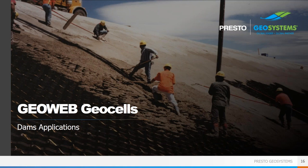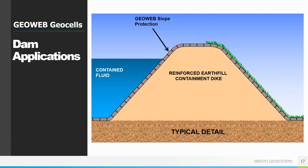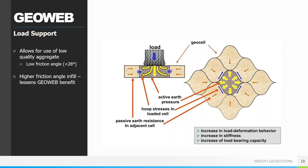Now we'll look at some application-specific uses of the GeoWeb system, starting with the armoring of dams, dikes, and levees. A typical earthen dam or dike application might look something like shown here. On the wet side, we'd have GeoWeb armoring, generally with an aggregate or concrete infill, with the infill type mostly dependent on wave action and drawdown rates. The cells could then be expanded over the top of the dike and down the dry side, providing a stable driving surface at the crest. Then on the dry side, we could transition to a topsoil vegetation solution, allowing for natural aesthetics while still providing erosion protection should the dam overtop.